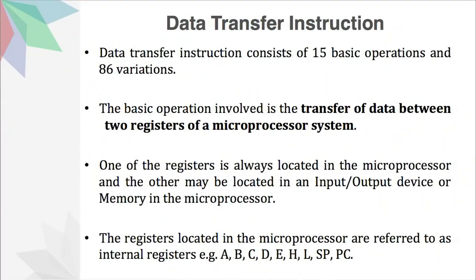Now let us talk about data transfer instructions. The data transfer instruction consists of 15 basic operations and 86 variations. The basic operation involved is the transfer of data between two registers of a microprocessor system. One of the registers will always be located in the microprocessor and the other may be located in an input-output device or in the memory. The registers located in the microprocessor are referred to as internal registers, and some examples are A, B, C, D, E, H, L, SP (the stack pointer), and PC (the program counter).